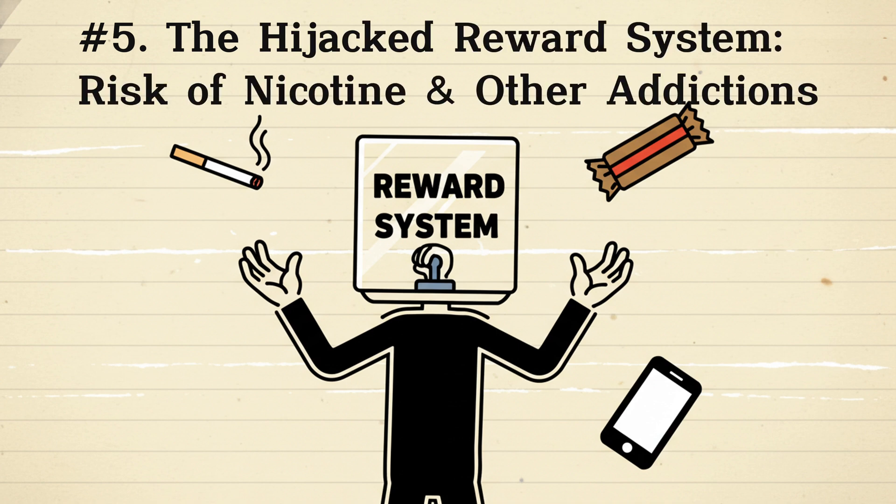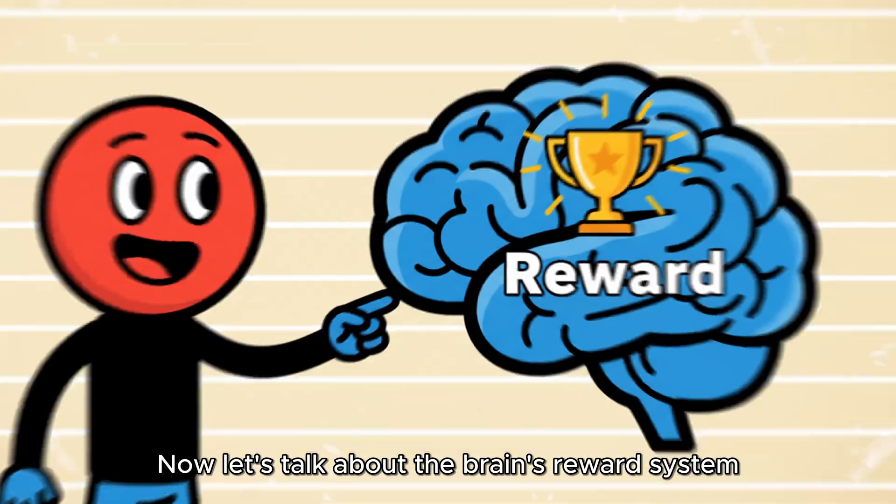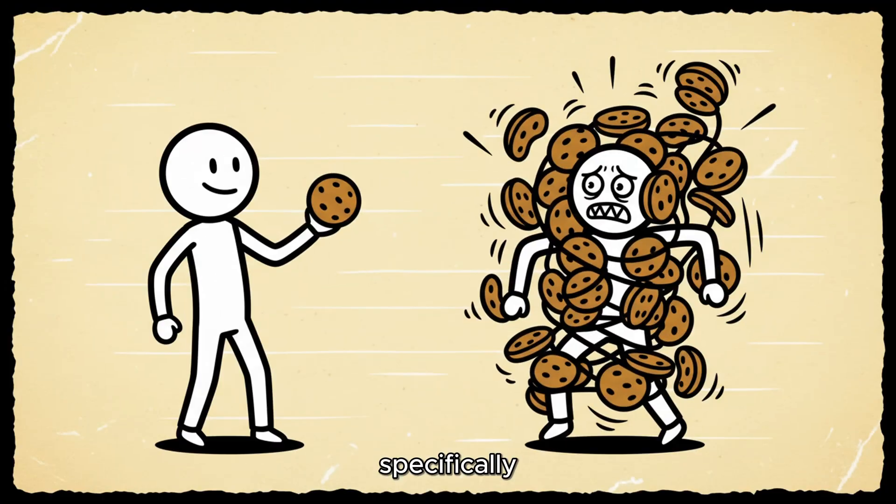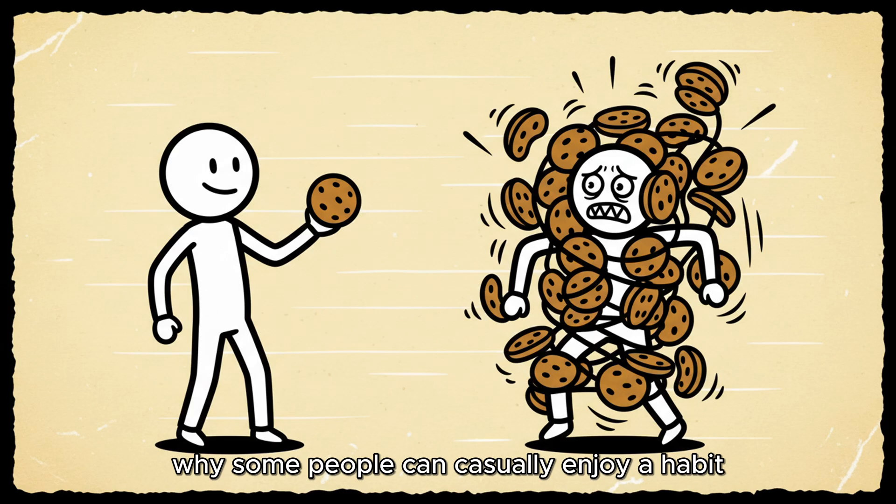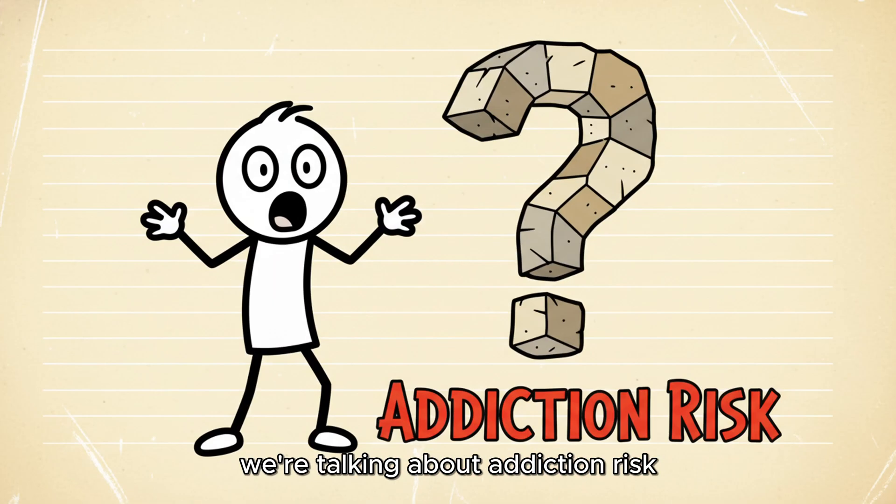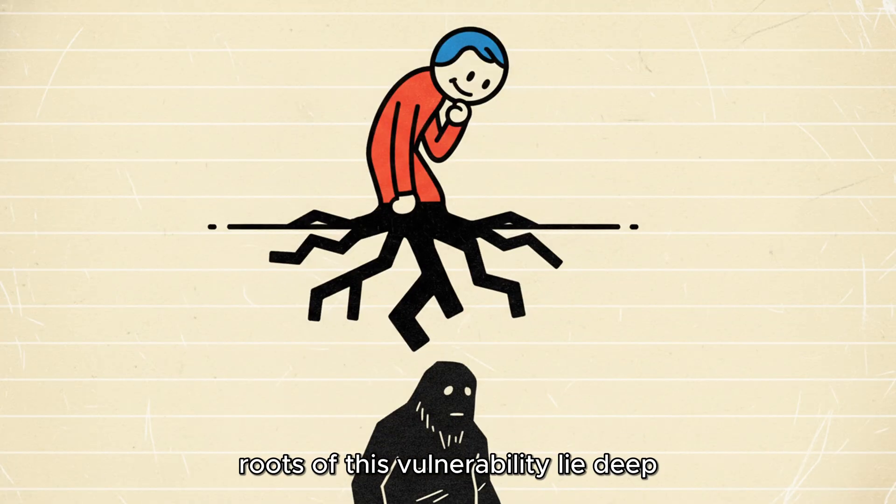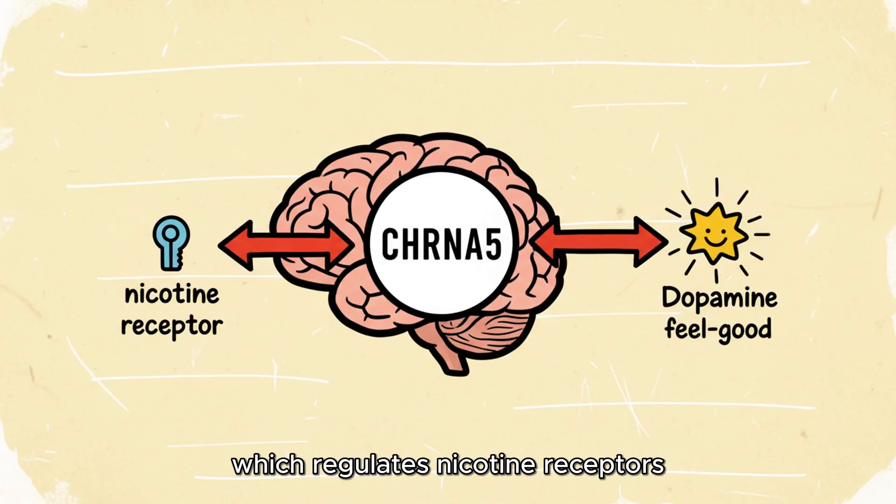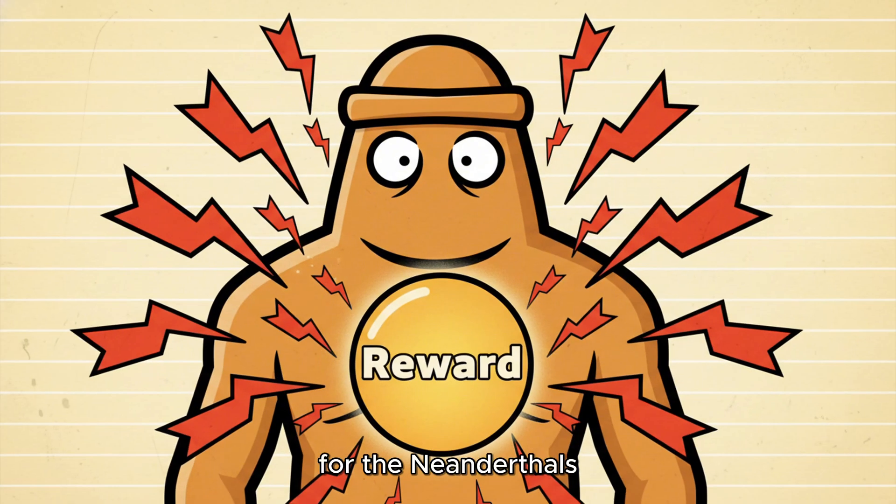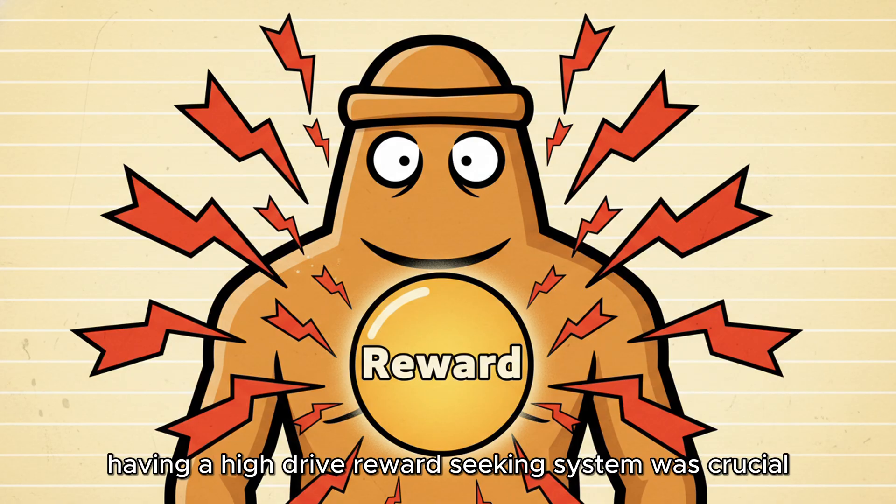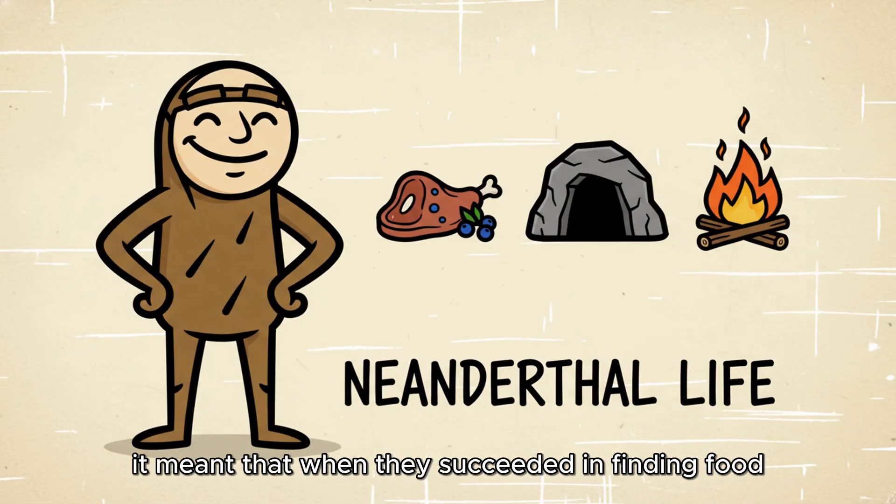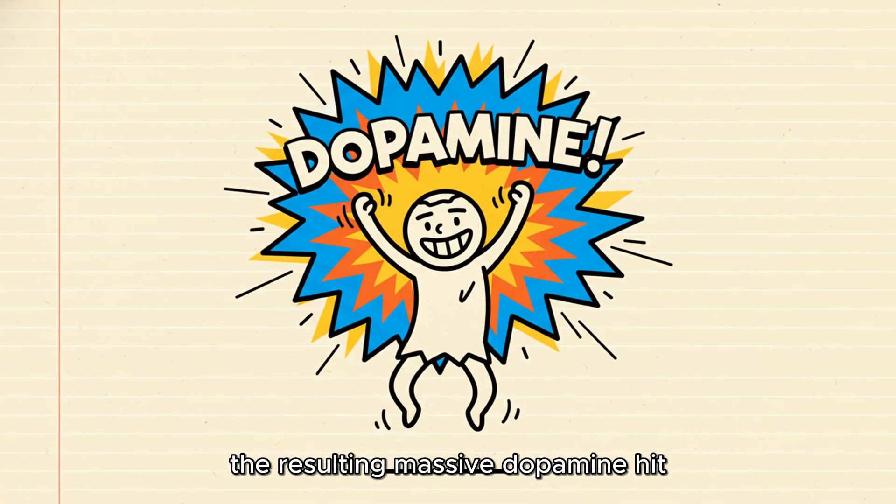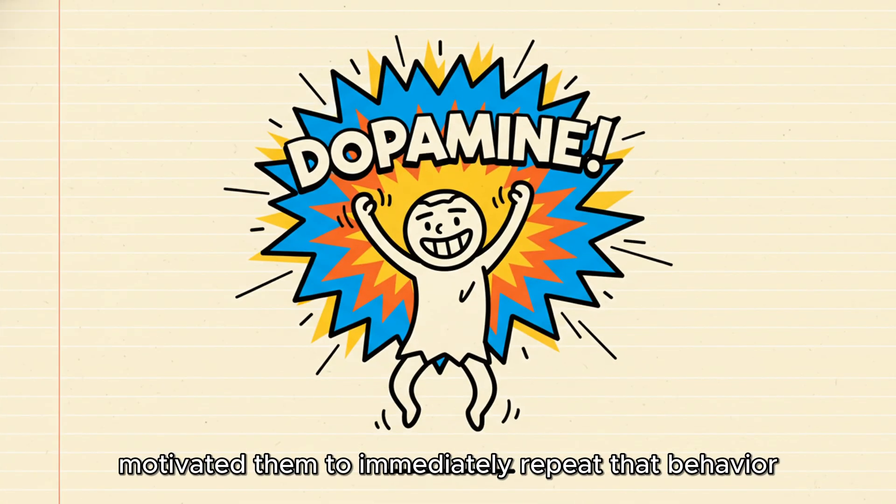Number 5, the hijacked reward system, risk of nicotine and other addictions. Now let's talk about the brain's reward system, specifically why some people can casually enjoy a habit while others get utterly hooked. We're talking about addiction risk, and surprisingly, the roots of this vulnerability lie deep within your Neanderthal lineage. This risk is strongly linked to the CHRNA-5 gene cluster, which regulates nicotine receptors and the release of dopamine, the feel-good neurotransmitter. For the Neanderthals, having a high-drive, reward-seeking system was crucial. It meant that when they succeeded in finding food, shelter, or fire, the resulting massive dopamine hit motivated them to immediately repeat that behavior.